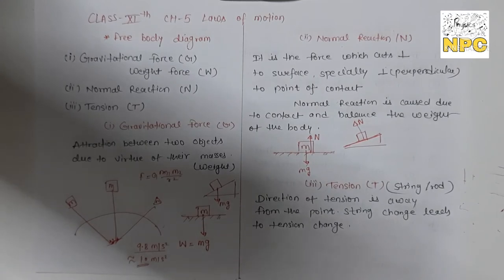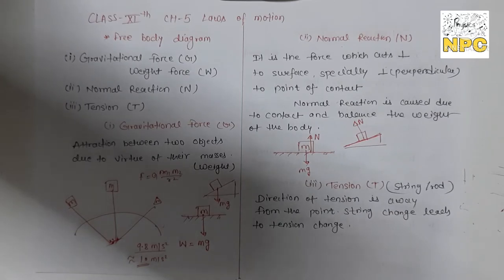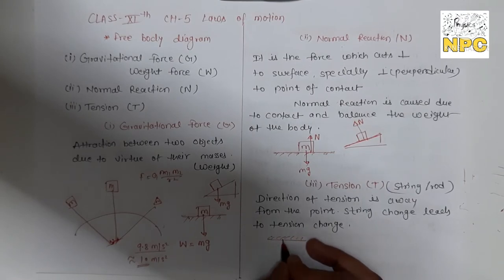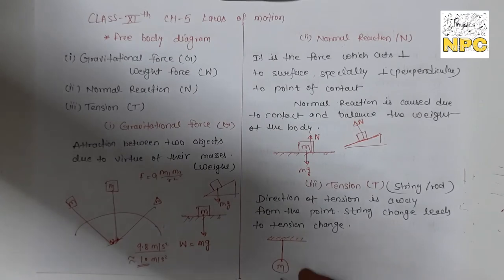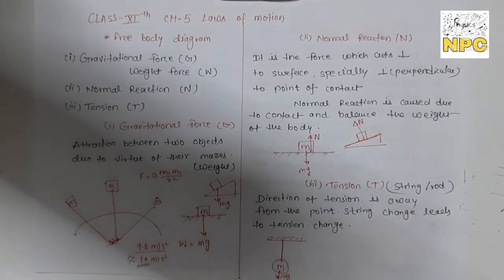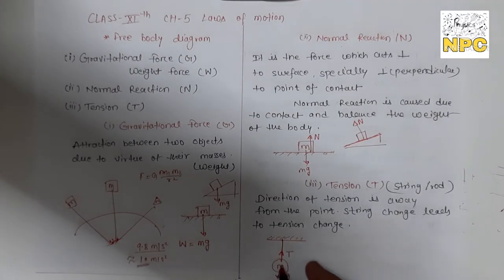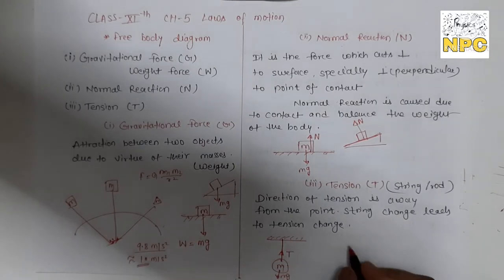The third force is tension. As you have seen with a string or rod — if an object is hung or a force is applied through a string, that force is called tension force. For example, if you have a surface and a mass M connected by a string, the weight force acts on M, and the string also generates a force — this is the tension force, represented by capital T, and it always acts away from the point of contact.